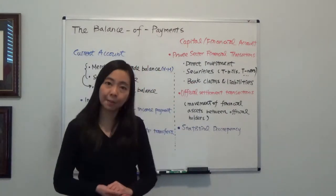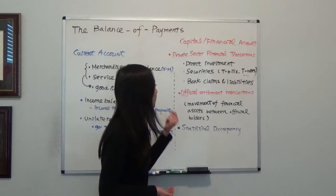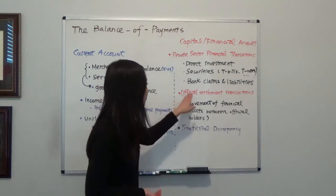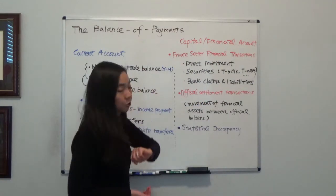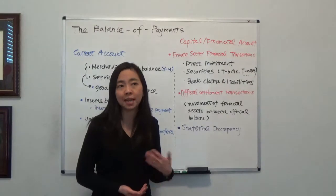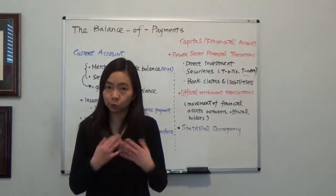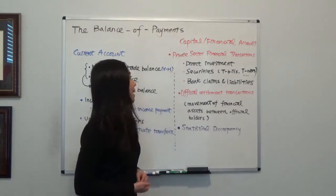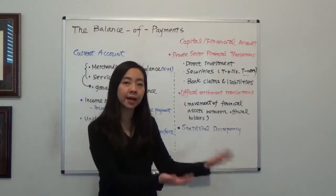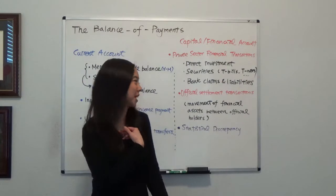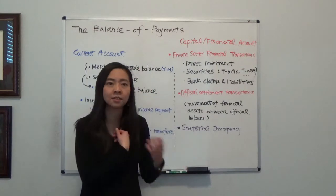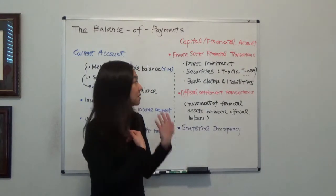Moving on to the capital and financial account. The capital and financial account consists of two main items: private sector financial transactions and official settlement transactions. Private sector financial transactions consist of three major things. The first is direct investment — that's when you purchase more than 10% of stock of a firm, giving you control of the firm. The second is securities, such as purchasing foreign treasury bills and treasury notes, or foreigners buying our treasury bills and treasury notes. And finally, bank claims, which includes loans, certificates of deposits, and things of that sort.